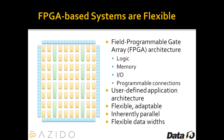Also, an FPGA is inherently parallel. You're not constrained by a single processing element — in fact, you can have hundreds or thousands of elements working simultaneously in an application. Also, you're not stuck with a fixed data width. If 27-bit data works best for your application, you can implement that in the FPGA without waste.